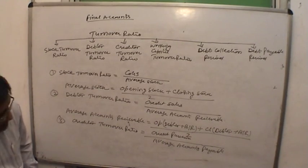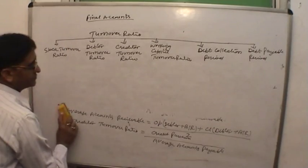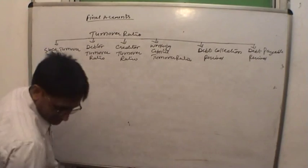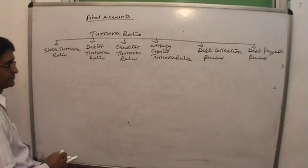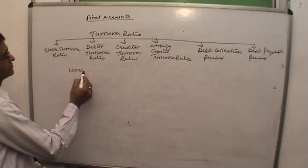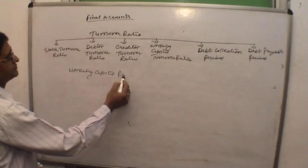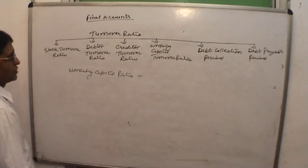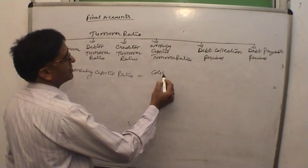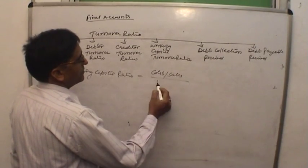Working capital ratio equals COGS or sales divided by working capital.